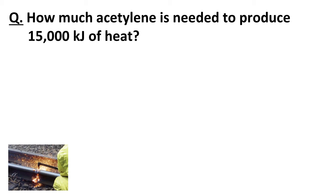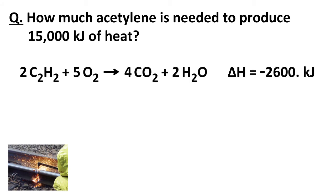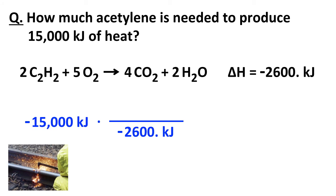We can also do this calculation in the other direction: how much acetylene is needed to produce 15,000 kilojoules of heat? We start with negative 15,000 kilojoules — the negative indicating energy is being given off — and from the thermochemical equation, negative 2,600 kilojoules corresponds to 2 moles of acetylene burning. We set it up so the kilojoules cancel; note the negatives also cancel. When 2 moles of acetylene burns, it produces 2,600 kilojoules of energy.